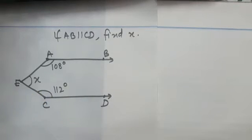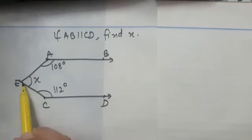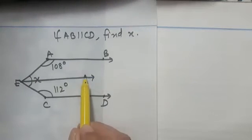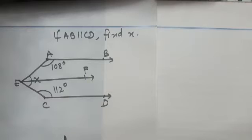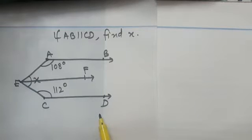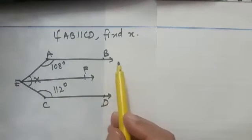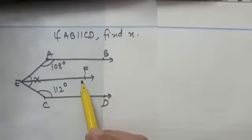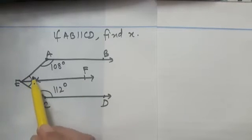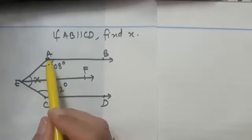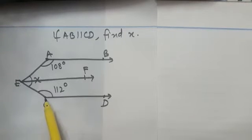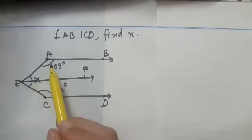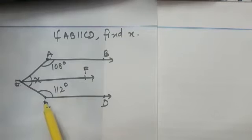In this particular question, what we do is a sort of construction. From E, we construct a line EF such that EF is parallel to either AB or CD. This is the basic construction. By doing this, x is divided into two parts: angle AEF and angle CEF. So x is the sum of angle AEF and angle CEF.